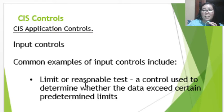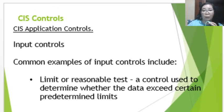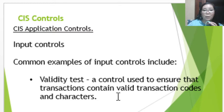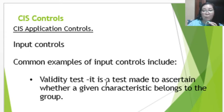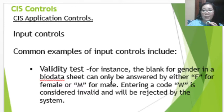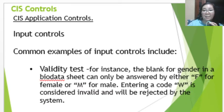Another input control is the limit or reasonableness test. This is a control used to determine whether the data exceeds certain predetermined limits. If the data exceeds those limits, the program will not recognize or will not process it further. The validity test is a control used to ensure that transactions contain only valid transaction codes and characters. It is a test made to ascertain whether a given characteristic belongs to an acceptable group, or else it will be rejected.